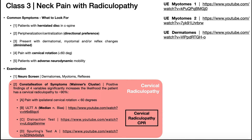We're going to continue on here with our neck pain classification system, and we're going to get into class three, which is neck pain with radiculopathy. Now before we get into what kind of things to look for and what treatments there's evidence for, let's first recall what a radiculopathy even is.